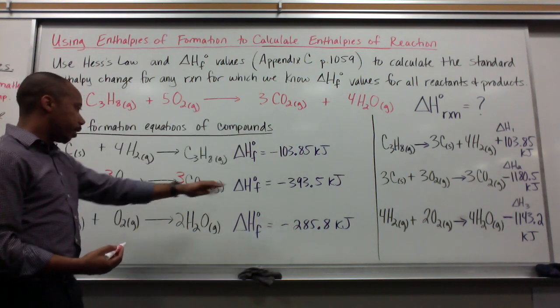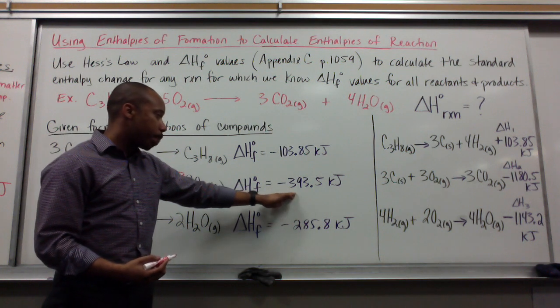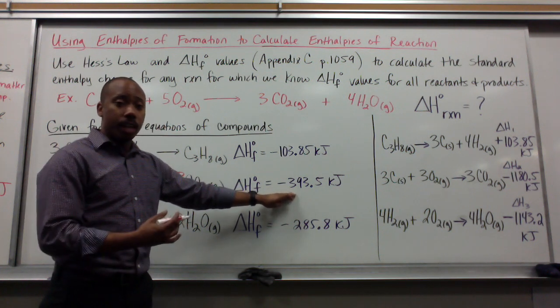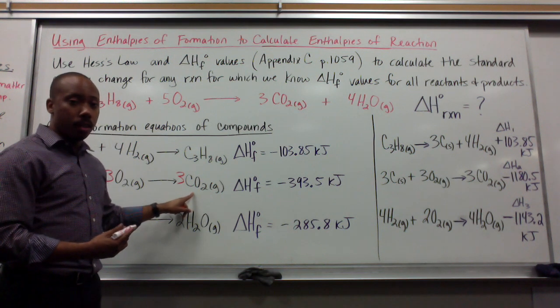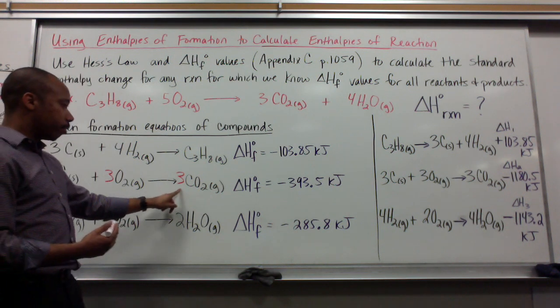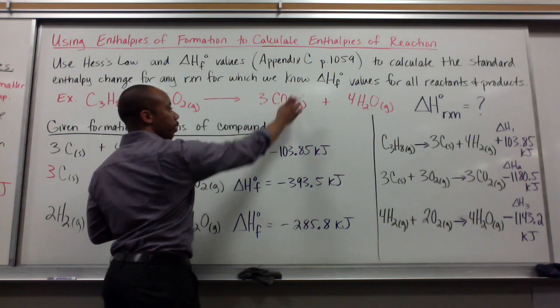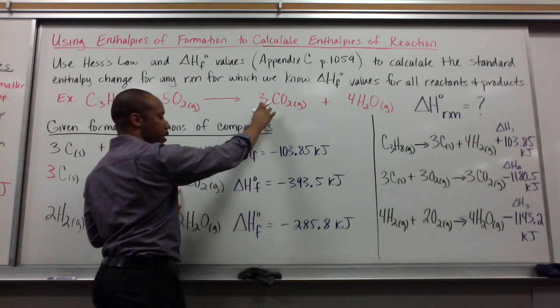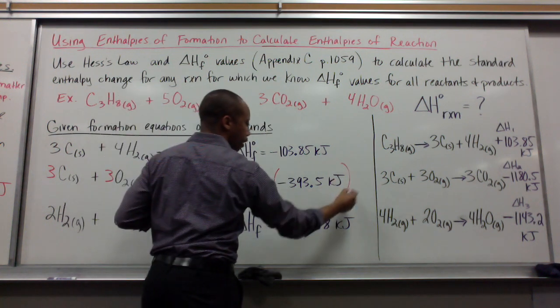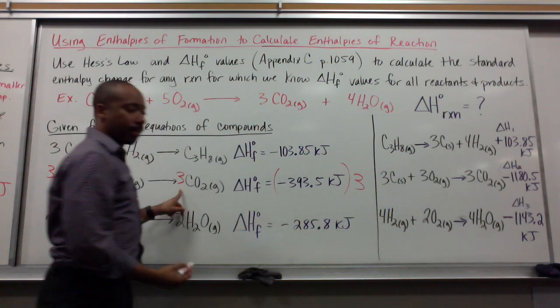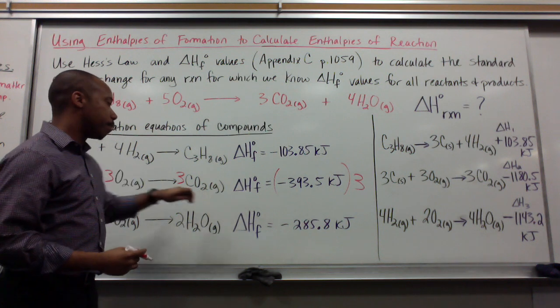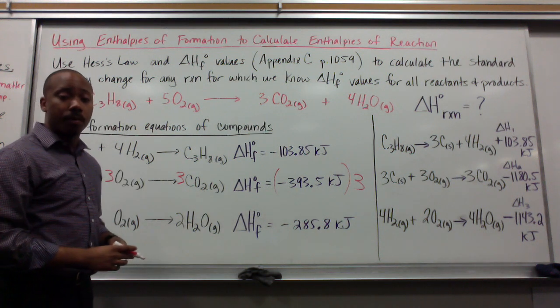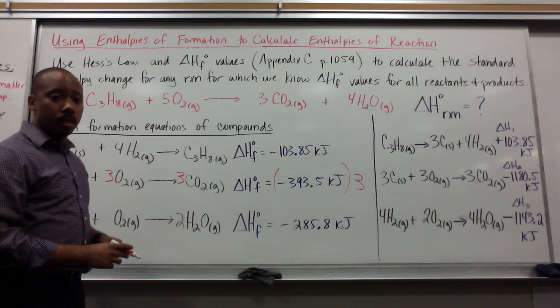Because this number here reflects only the enthalpy change of one mole of carbon dioxide being produced. So if we put a three here, it will reflect the three that we need up here. And now you multiply this times three. Because as an extensive property, enthalpy will depend on the amount of carbon dioxide that we have as well.